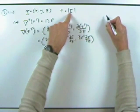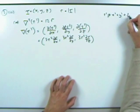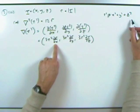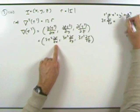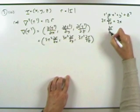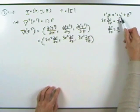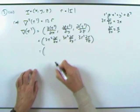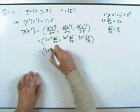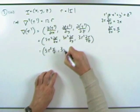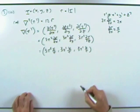Now, R² = x² + y² + z². Taking partials: 2R · (∂R/∂x) = 2x, so ∂R/∂x = x/R. By symmetry, ∂R/∂y = y/R and ∂R/∂z = z/R. So grad R³ = (3R² · x/R, 3R² · y/R, 3R² · z/R) = (3Rx, 3Ry, 3Rz).